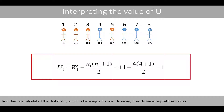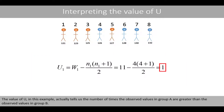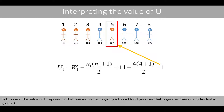How do we interpret this value? The value of U in this example actually tells us the number of times the observed values in group A are greater than the observed values in group B. In this case, the value of U represents that one individual in group A has a blood pressure that is greater than one individual in group B.